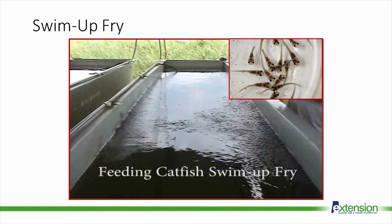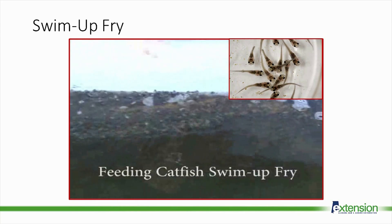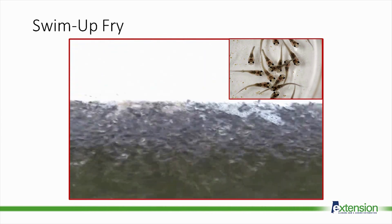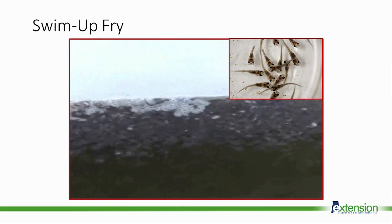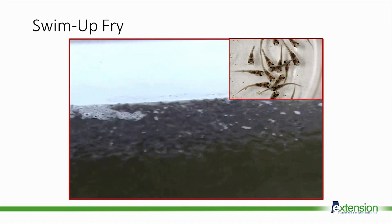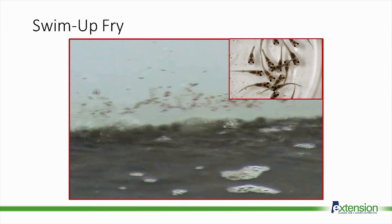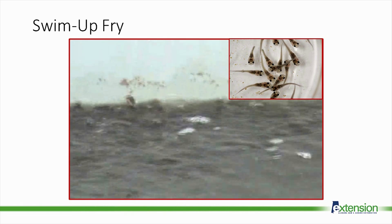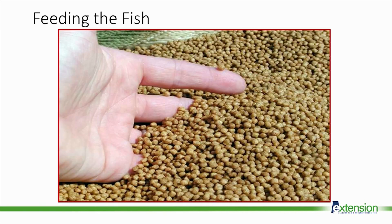Once counted, the sac fry are placed in a larger trough. Once the yolk sac is absorbed, the fish will begin to turn black and swim to the top looking for feed. At this point they're called swim-up fry. They're fed four to eight times a day until they grow strong enough to be put into the fingerling ponds. Once the fish are moved to a pond, they're fed a pelleted feed — the initial feed is very small, and as the fish grows the farmer will use larger and larger pellets.